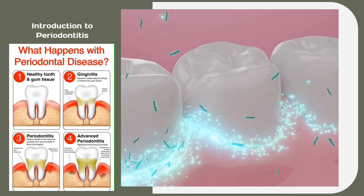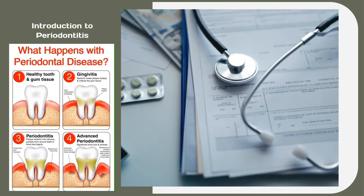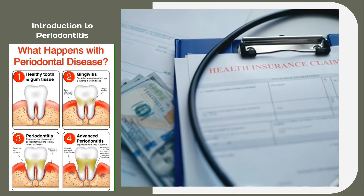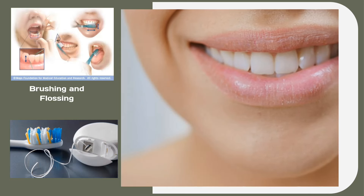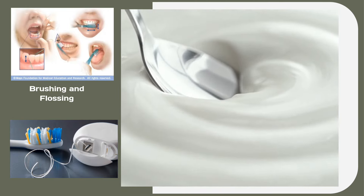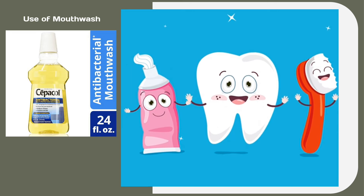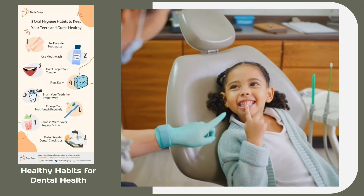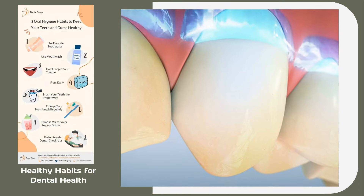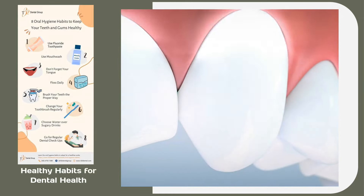Periodontitis is a serious gum infection that damages the soft tissue and destroys the bone that supports your teeth. But there are ways to prevent it. Regular brushing prevents the accumulation of a germ layer on your teeth. Using dental floss gets rid of food residues and germs from the spaces between your teeth. Antibacterial mouthwash reduces the germs in your mouth and prevents gum infections. Lifestyle changes are also necessary: quit smoking, avoid stress, maintain a balanced diet, and refrain from excessive teeth grinding. These healthy habits can reduce your risk of developing gingivitis.